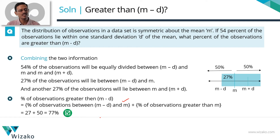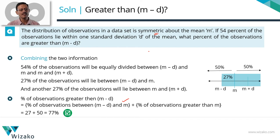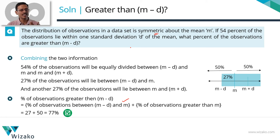This is how most GMAT standard deviation questions are going to be. It's testing whether you understand what we mean by symmetric about the mean, and whether you know what it means that a certain percentage of data points lie within one standard deviation of the mean. That is what is tested in this question.